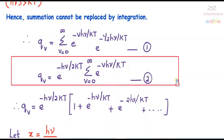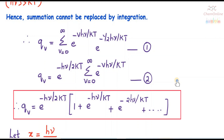So here we are not replacing the summation by integration. Retaining the summation terms and expanding, we have q_v equals summation from v = 0 to infinity of e raised to minus vhν/kT, multiplied by e raised to minus hν/2kT. Expanding: when v = 0 that is 1; when v = 1 that is e raised to minus hν/kT; when v = 2 that is e raised to minus 2hν/kT; and so on.